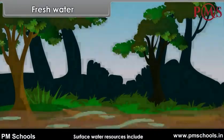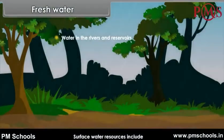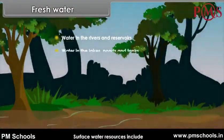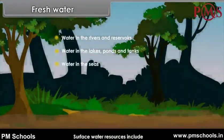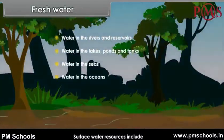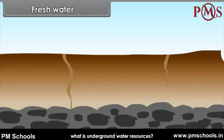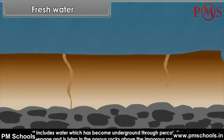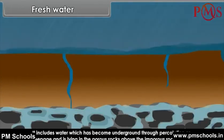Surface water resources include water in the rivers and reservoirs, water in the lakes, ponds and tanks, water in the seas, and water in the oceans. Underground water resources include water that has seeped underground through percolation and is lying in porous rocks.